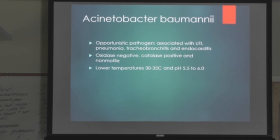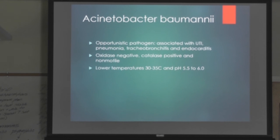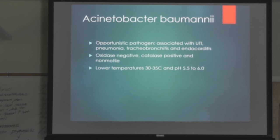Sintobacter is an opportunistic pathogen. It is oxidase negative but catalase positive, with lower temperature preferences of 30 to 35 degrees Celsius and a pH of 5.5 to 6. Sometimes it can appear as gram-positive cocci in smears made from blood culture bottles, which is a problem in identification. It's capable of growing on most media, and on most media it will produce purplish colors, making it look like a lactose fermenter when in fact it's not.